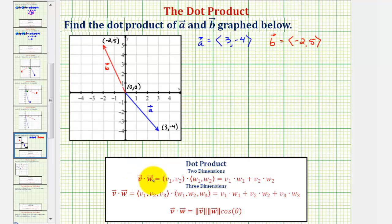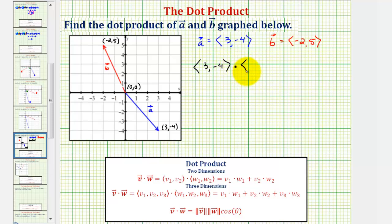Vector V dotted with vector W is equal to vector W dotted with vector V, and therefore the order of the dot product does not affect the result. So vector A dotted with vector B equals three times negative two, plus negative four times five.